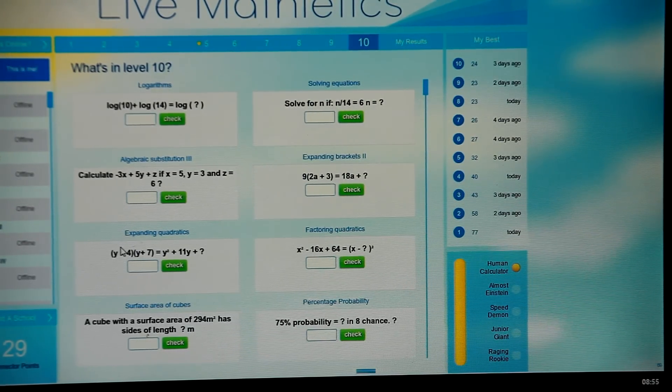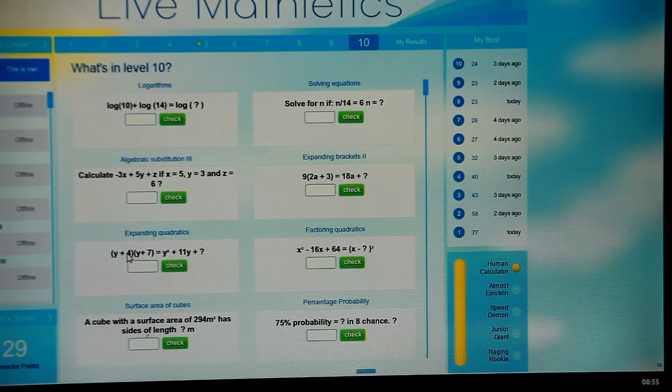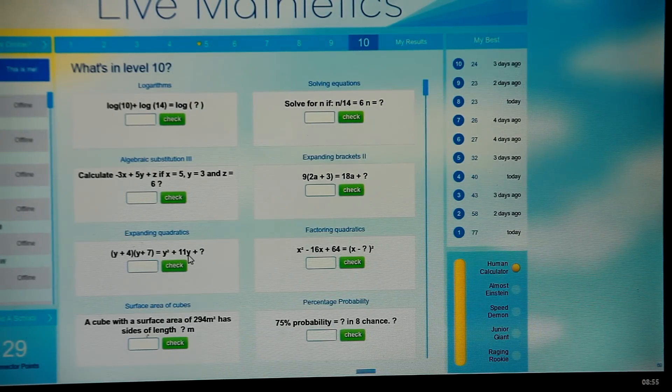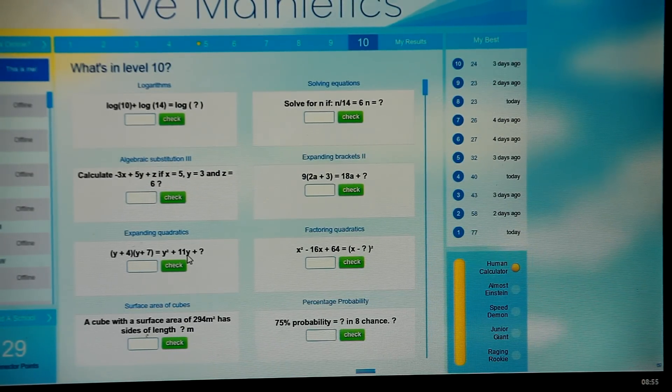The way we get the result over here is to multiply the firsts, which are y times y gives you y squared, and then we combine together the outers and the inners. The outers give you 7y, the inners give you 4y, so that's why we've got 11y there.